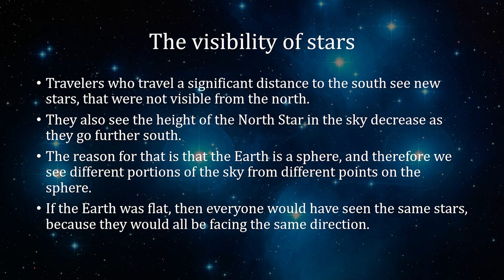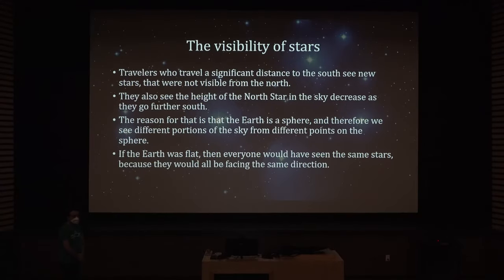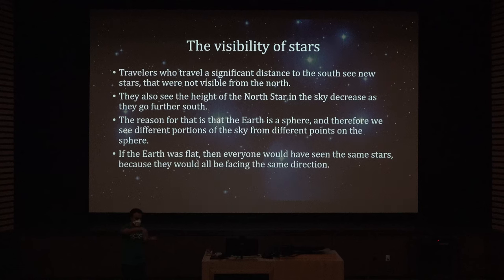Another piece of evidence: travelers who travel a significant distance to the south see new stars that were not visible from the north. They also see the height of the North Star in the sky decrease as they go further south. The reason is that the Earth is a sphere, and therefore we see different portions of the sky from different points on it. If the Earth were flat, everyone would see the same stars.